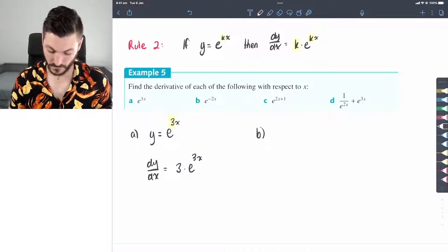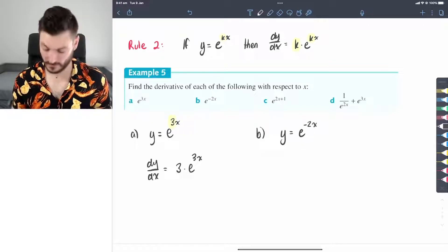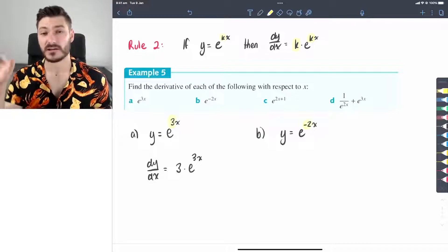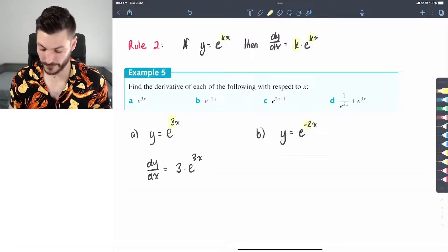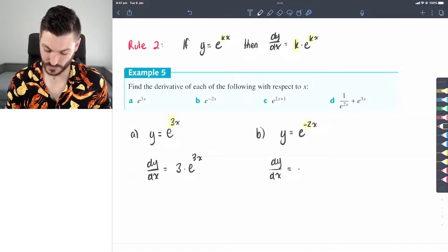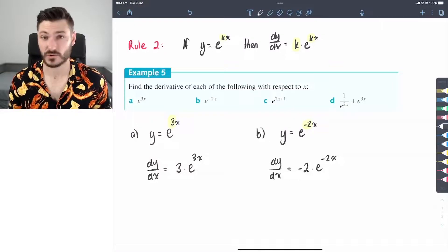Moving on to part b, we have y equals e to the power of negative 2x. In this case, the negative 2 is my k value. So the entire negative 2 is going to come down the front. So the derivative of y with respect to x equals negative 2 times e to the negative 2x.